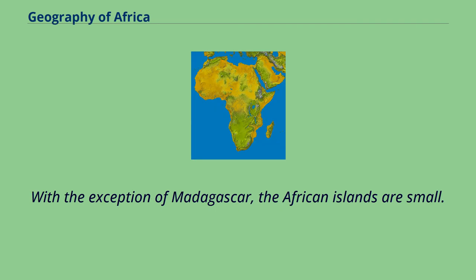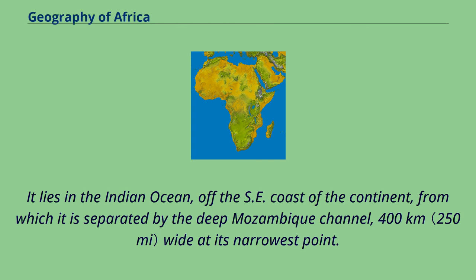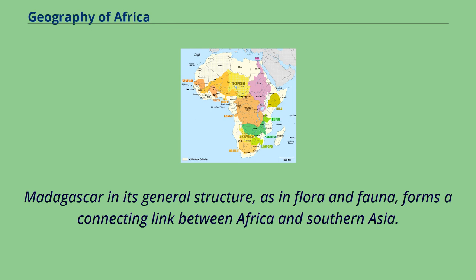With the exception of Madagascar, the African islands are small. Madagascar, with an area of 587,041 square kilometers, is, after Greenland, New Guinea and Borneo, the fourth largest island on earth. It lies in the Indian Ocean, off the southeast coast of the continent, from which it is separated by the deep Mozambique Channel, 400 kilometers wide at its narrowest point. Madagascar in its general structure, as in flora and fauna, forms a connecting link between Africa and Southern Asia.